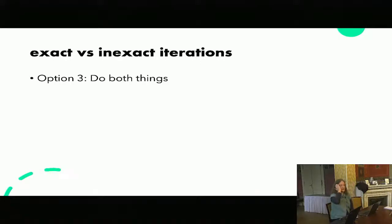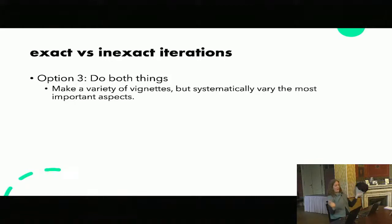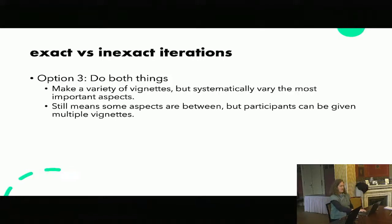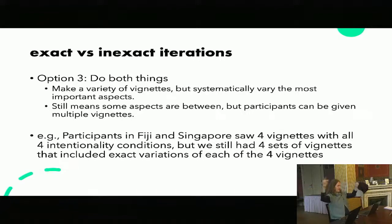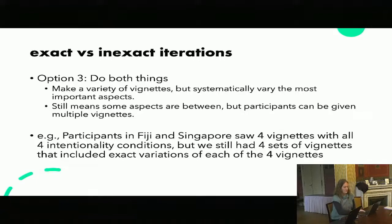Option three — and this is usually what I end up doing — is doing both things. You make a variety of vignettes but systematically vary the most important aspect. So if you have four conditions, you end up with four vignettes that are all different stories, and then there are four versions of each of those vignettes. You can give people four vignettes so that every single person sees every condition, and that allows a much smaller sample because you're getting each person across each condition while also controlling for variation. This setup gets really complicated really quickly when you start looking across more and more variables.